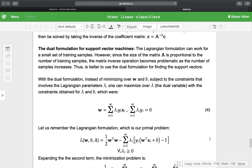The Lagrangian formulation can work for a small set of training samples. However, as the number of training samples increases, the size of the matrix A can get large and the matrix inverse operation becomes problematic. Thus, it's better to use the dual formulation for finding the support vectors.